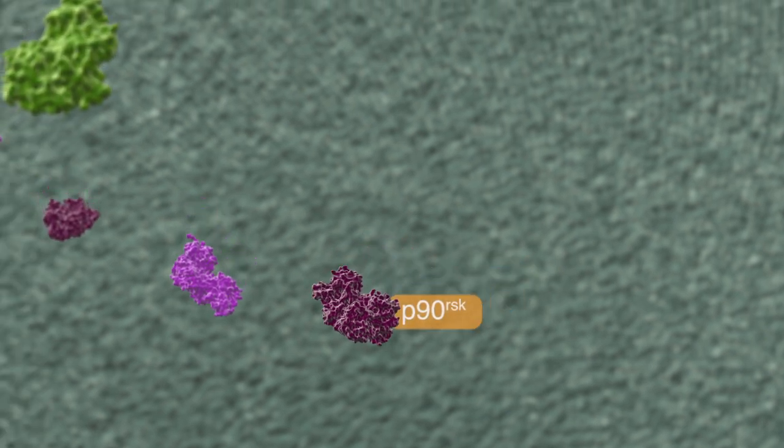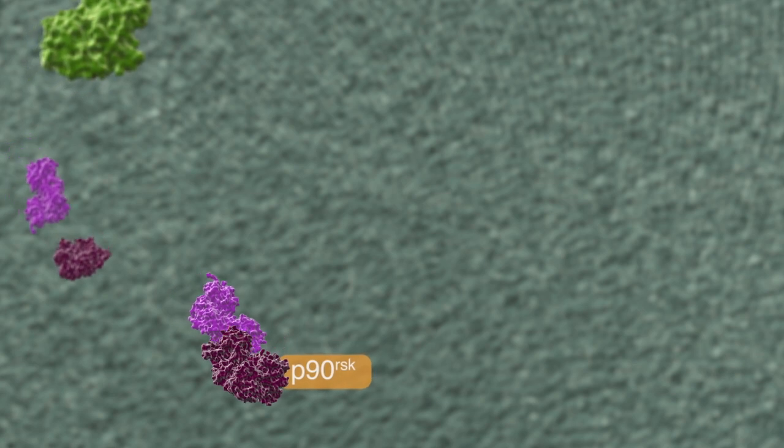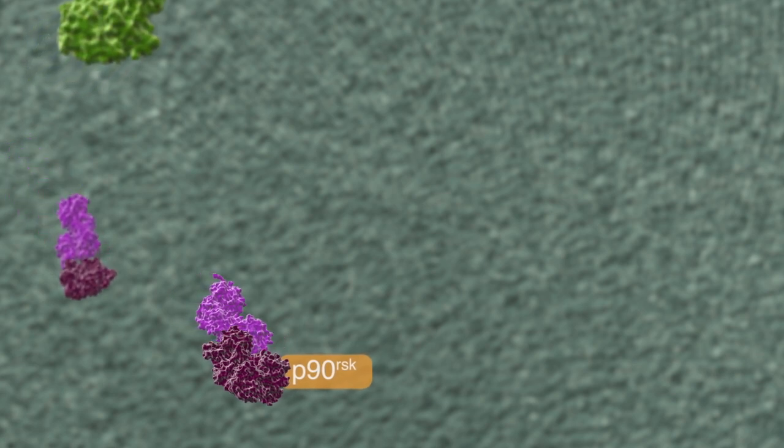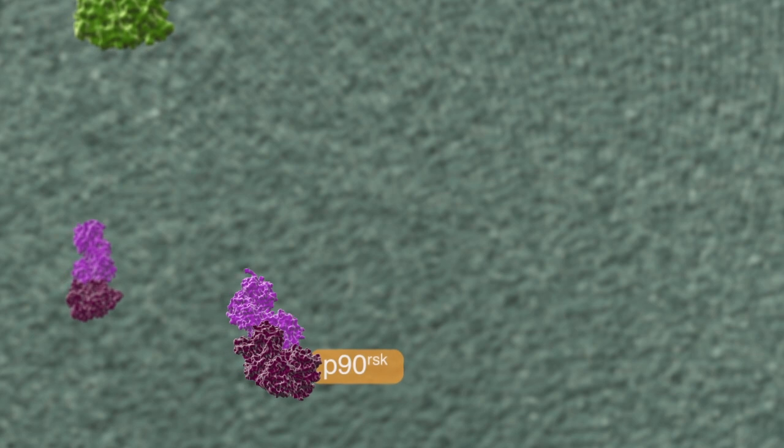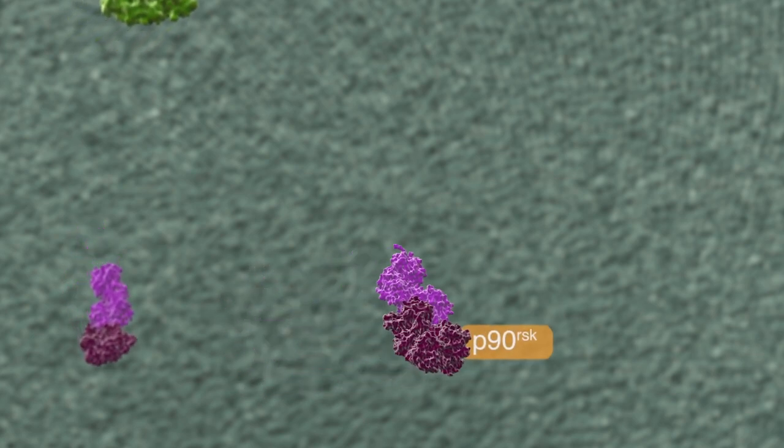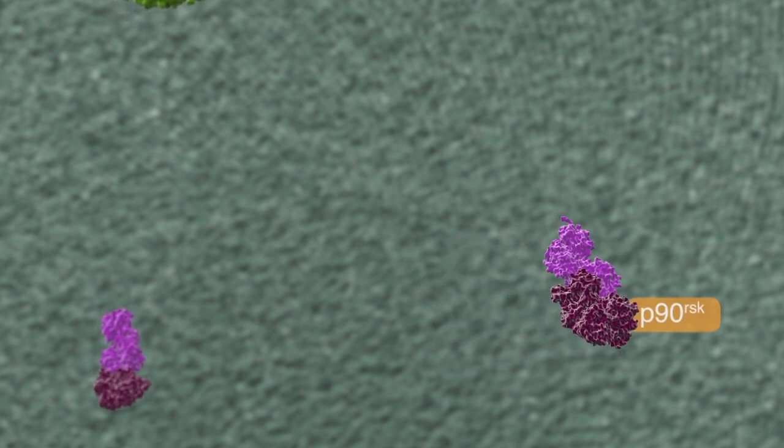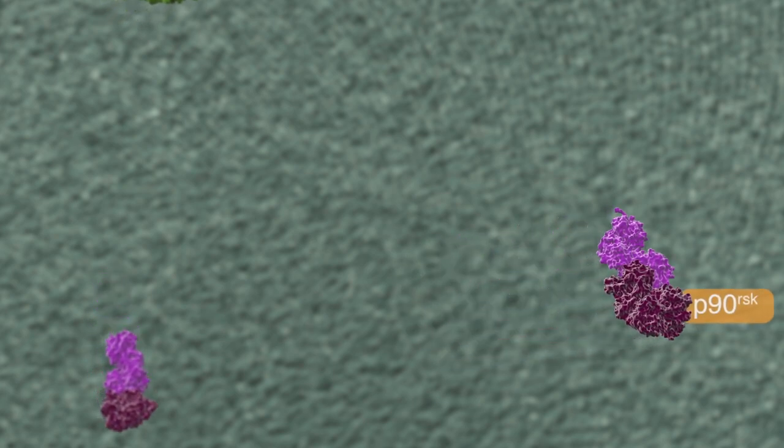ERK1 and ERK2 also interact with the ribosomal S6 kinase, P90RSK, in the cytoplasm to influence protein translation. Activated ERK2 can interact with BAD to influence apoptosis signaling, and can interact with mTORC1 to regulate PI3K signaling as well.